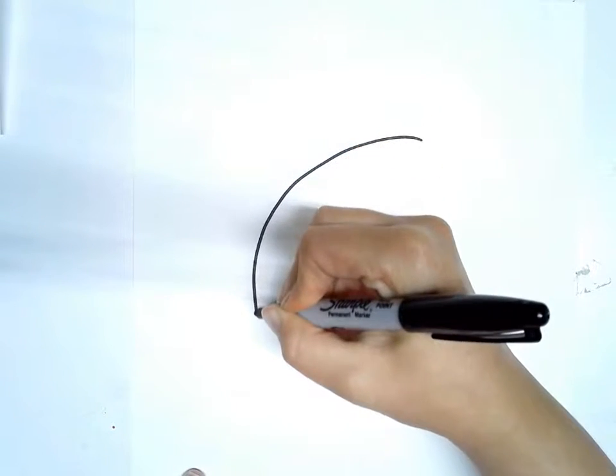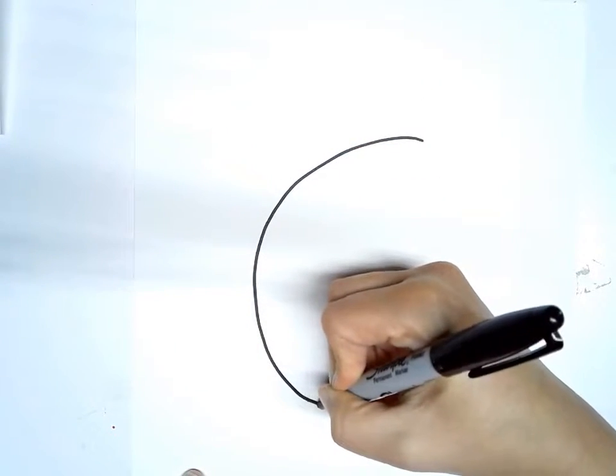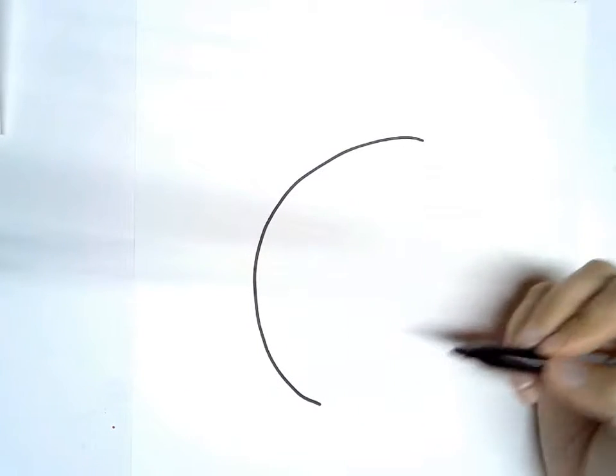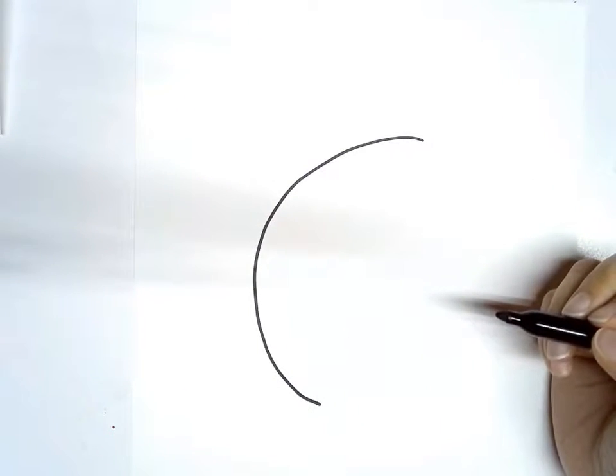So to begin with you're going to draw a half circle, a semi-circle, quite large. This is going to be the main part of your design, so however big you make this determines how big your design will be.